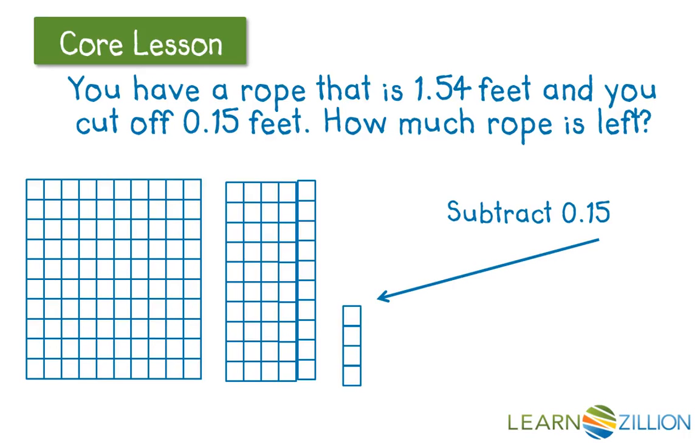When I go to cut off 15 hundredths, I need to start by subtracting 5 hundredths. We always start by subtracting from the lowest value. So as we do that, I see that I need to subtract 5 hundredths, but I only have 4 hundredths. So this gives me an opportunity to take one of my tenths and break it down into its hundredths pieces. And you can see now I have 4 tenths and 14 hundredths.